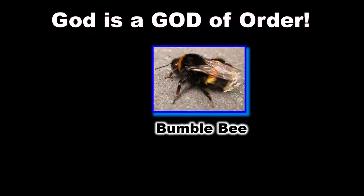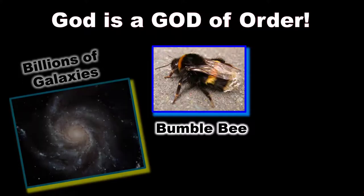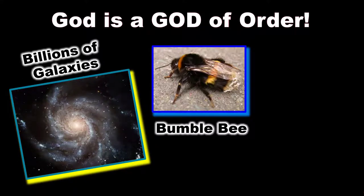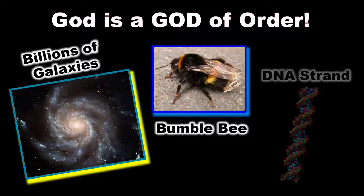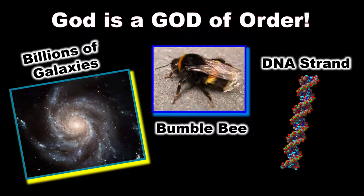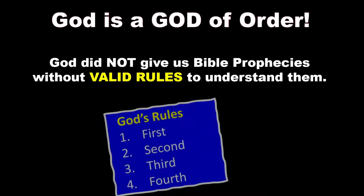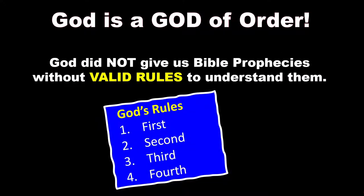Consider the bumblebee. Aeronautic flight engineers say that it is impossible for the bumblebee to fly. Of course, with God, nothing is impossible. And consider the billions of galaxies out there — they're all rotating around in their order. And what about the DNA that we have found out about in recent years? It's absolutely amazing that every living thing on earth has a DNA strand. God didn't give us Bible prophecies without valid rules to understand them.